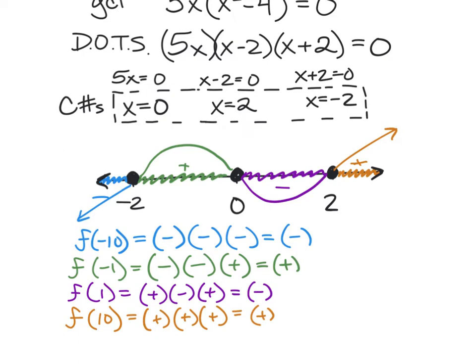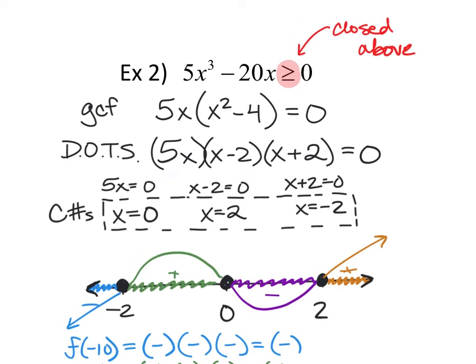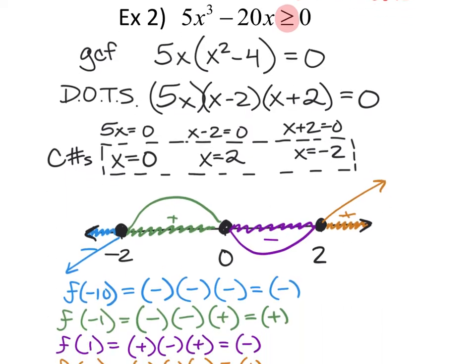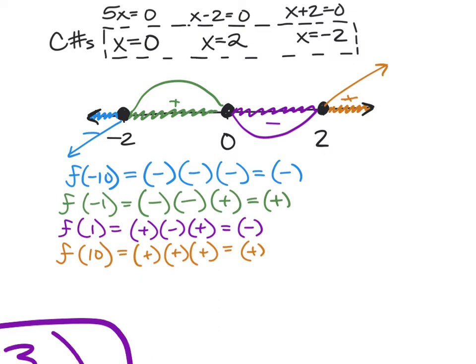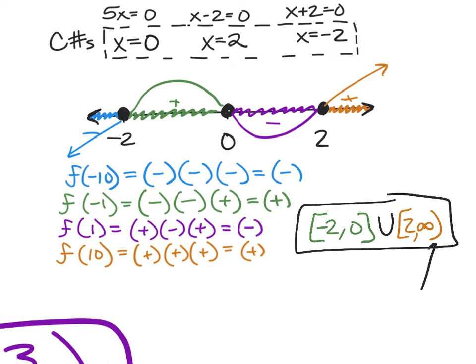We're solving an inequality that asks where the expression is above the x-axis (≥ 0). The sub-intervals above are from -2 to 0 and from 2 to infinity. Since it's a closed inequality (≥), we use brackets: [-2, 0] ∪ [2, ∞). We switch to a parenthesis at infinity because infinity is always exclusive — we never actually reach it.